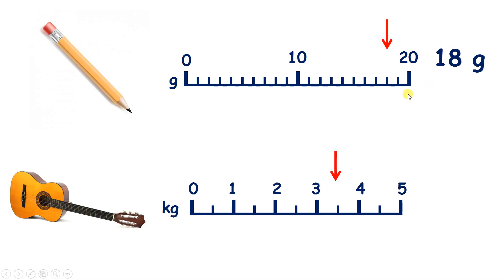The other way to do this would be to see that the arrow is at 2 before 20, and if each marking represents 1 gram, we can just take away 2 from 20 to give us 18.